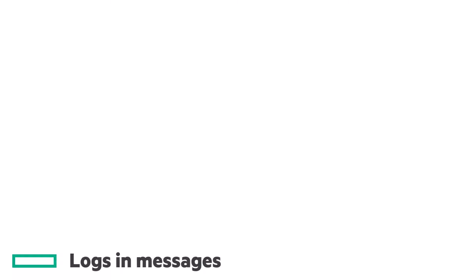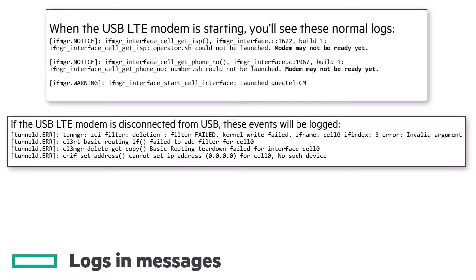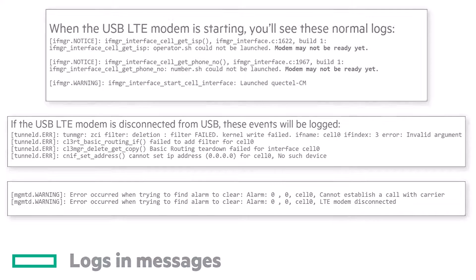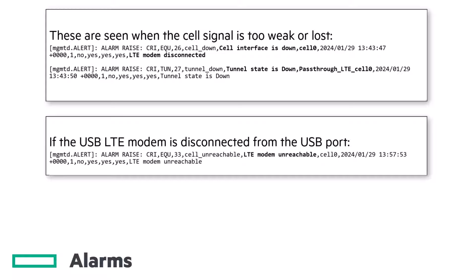In the messages file, as well as the output seen from the Live Logs command, you'll see some other entries. These IFMGR logs are normal when the USB LTE modem is initializing. You'll see these TunnelD errors if the modem is removed from the USB port — again, these are normal. You might also see these warning logs from MGMTD after device removal. In the alerts file, or on the Monitoring Alarms UI page, you'll see these logs if the cell signal is too weak or lost. If you don't see the cell interface's down entry, perhaps there is an issue with internet access across the cell service. If the modem is removed from the USB port, you'll see this alarm: LTE modem unreachable.